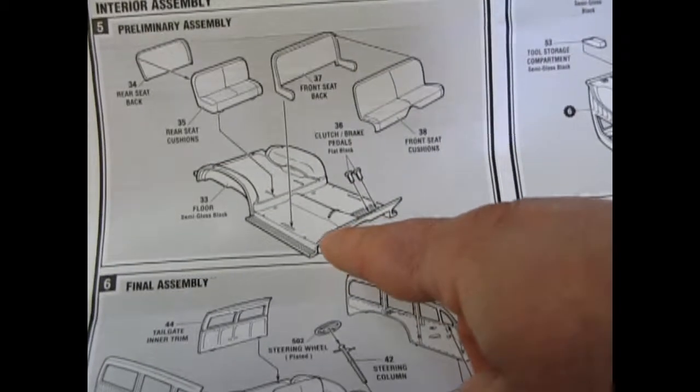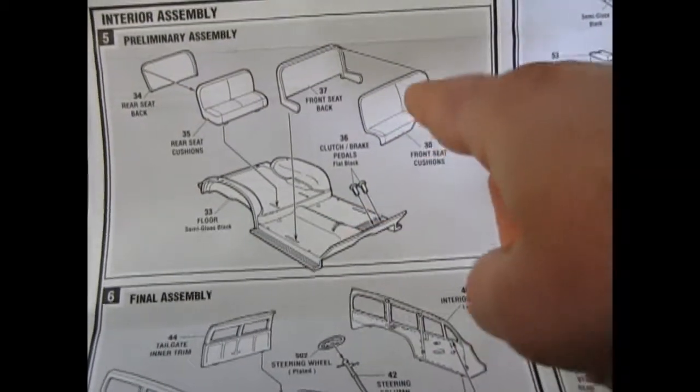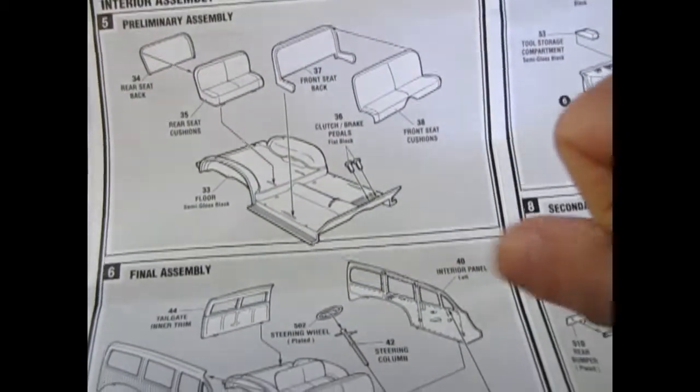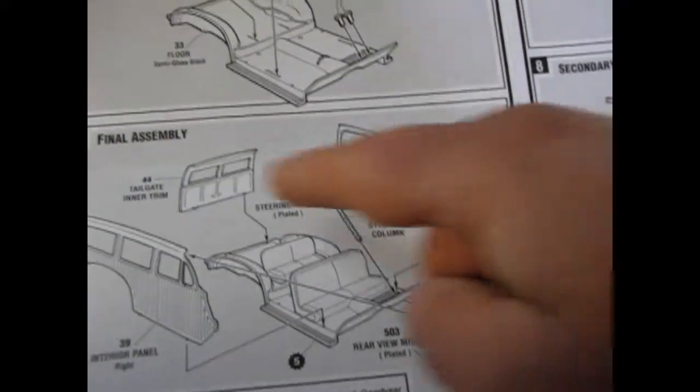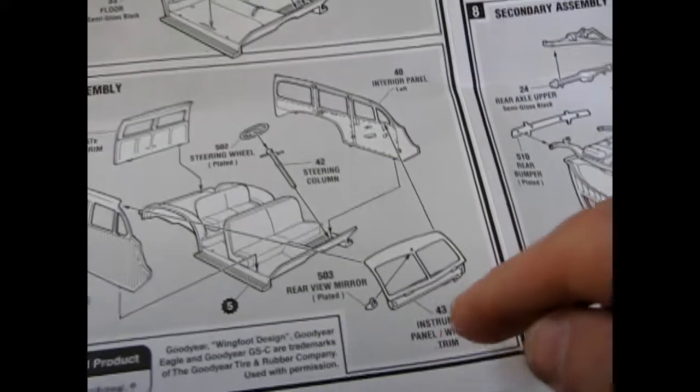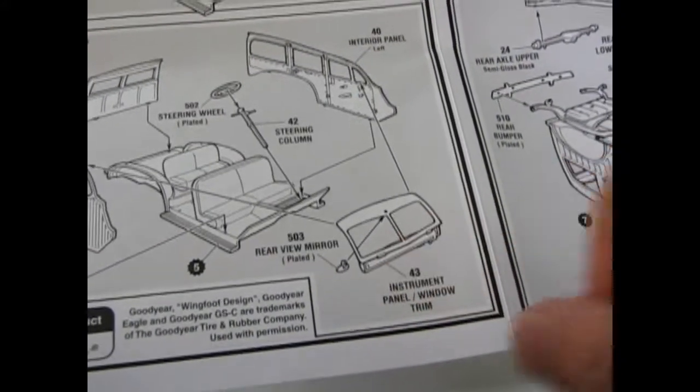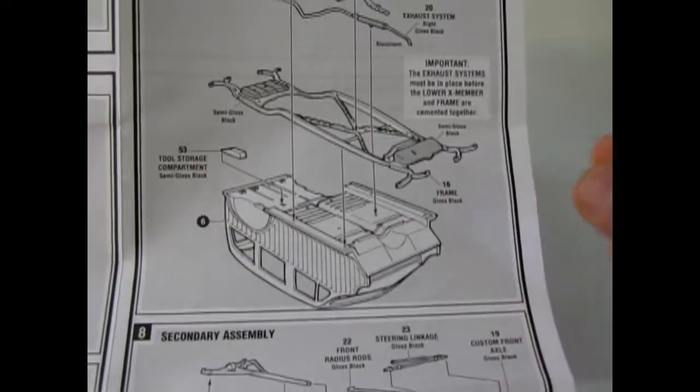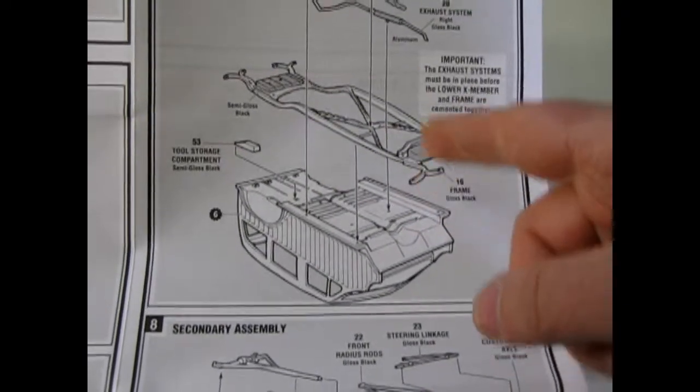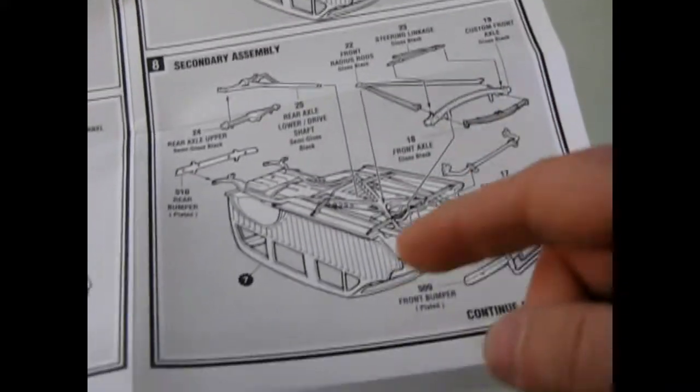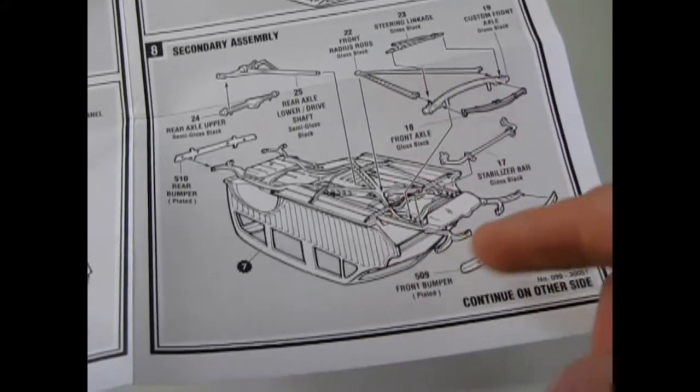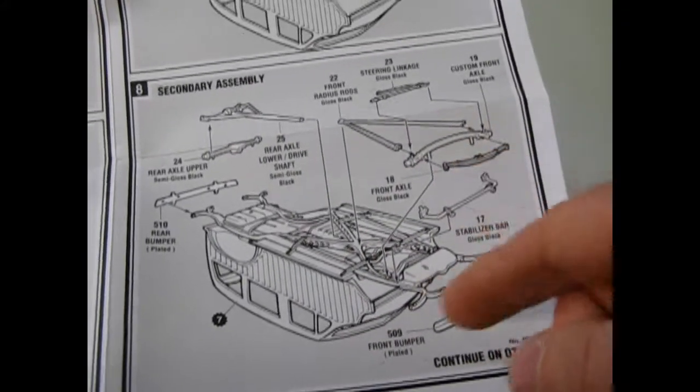And then a brand new floor pan with seats with front and backs and clutch and brake pedals. The separate side interior panels and the front windshield inside top, which was really innovative for what it was.